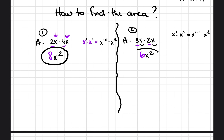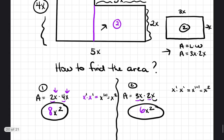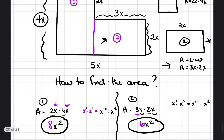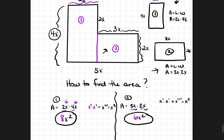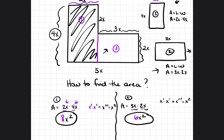Now we know the area of the first box — 8x squared — and the area of the second box — 6x squared.